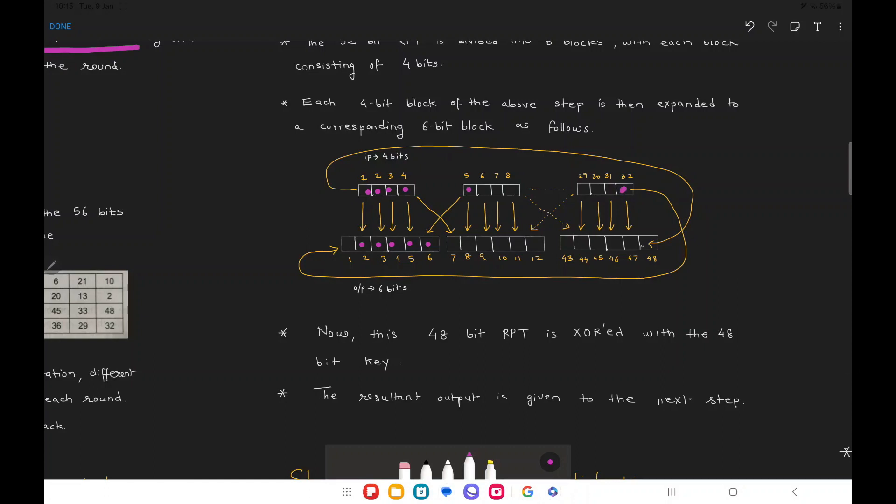There is a simple point to note: the last value of the last row is copied to the first value of the new row. Similarly, the first value of the old row is copied into the last value of the new row. That is what we have just seen.